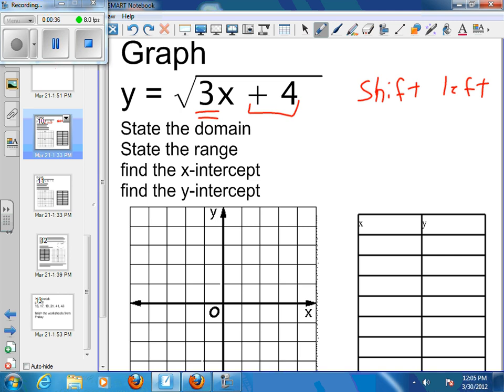Finding the x-intercept is pretty easy. You want to know where y is 0. So if y is 0, we would have 0 equals the square root of 3x plus 4. If you square both sides, then 0 equals 3x plus 4. Subtract 4 from both sides, so negative 4 equals 3x, then divide both sides by 3. So negative 4 thirds equals x when y is 0.